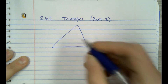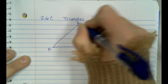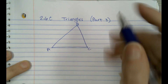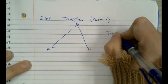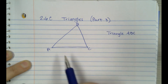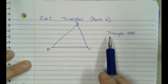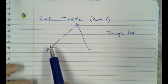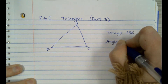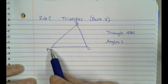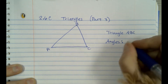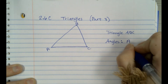All right, if this is my triangle, we would say this is triangle ABC. We always use the angles to name it, so we would say this is triangle ABC. The angles — you just use one letter. This is angle A, this is angle B, and this is angle C.